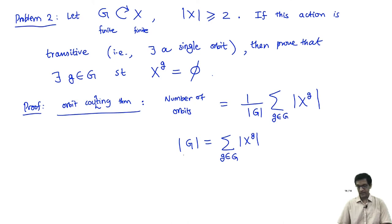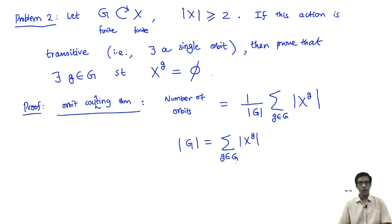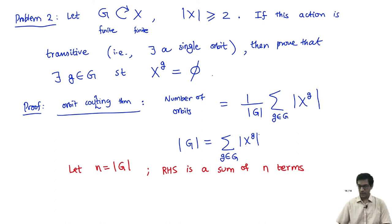This is the equation we need to understand. The left-hand side is the cardinality of the group itself, say n. The right-hand side is a sum of n terms, one for each group element. All these n terms are non-negative integers because each is the cardinality of a set of fixed points.